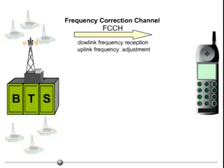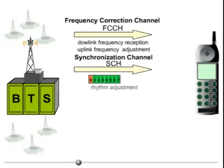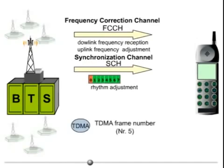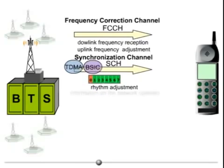The synchronization channel, SCH, then helps the mobile station to synchronize itself to time slot 0 sent out by the BTS. This means the mobile station must adjust to the rhythm given by the BTS. The SCH contains the TDMA frame number as well as the base station identity code, containing basic information about the network operator that can be compared with the info stored on the SIM card.